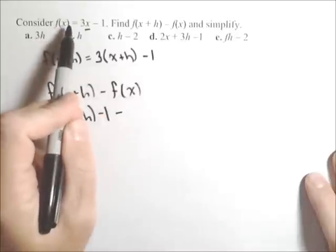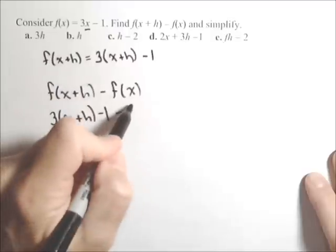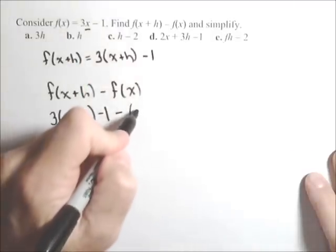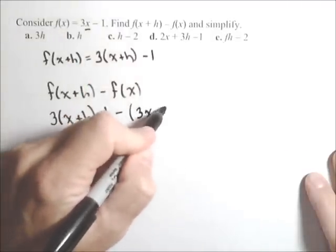Now f(x) is just the original function. But because of the minus, it's a really good idea to put that f(x) in parentheses, so (3x - 1).